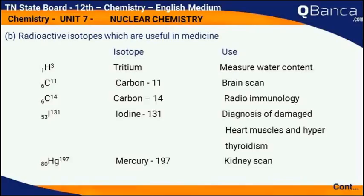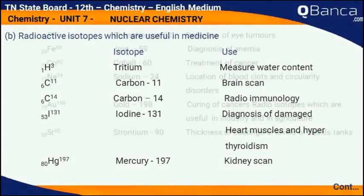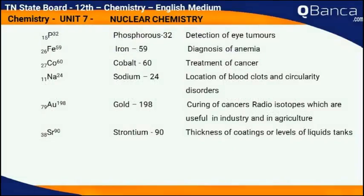I53-131 Isotope iodine-131 — use: diagnosis of damaged heart muscles and hyperthyroidism. HG80-197 Isotope mercury-197 — use: kidney scan. P15-32 Isotope phosphorus-32 — use: detection of eye tumours. Fe26-59 Isotope iron-59 — use: diagnosis of anemia.